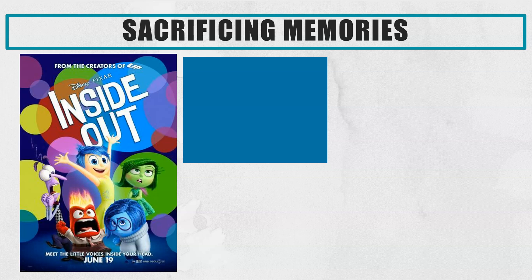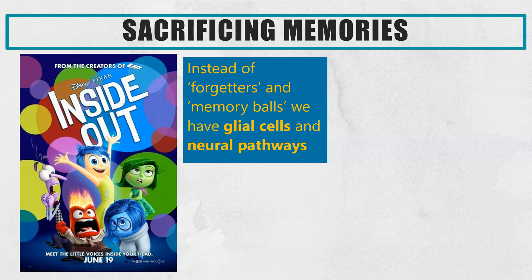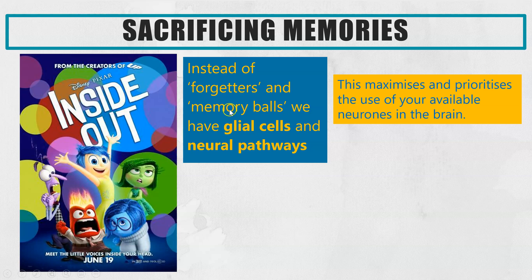This links to one of my favorite films, Inside Out. In the film there are janitor-like characters called forgetters who go around removing memory balls that haven't been thought about for a long time — and that models exactly what happens in human memory. Instead of forgetters and memory balls, we have glial cells in the brain, which go around cutting and severing neural pathways. If you are not thinking about a memory frequently enough, the glial cells will sever that pathway.